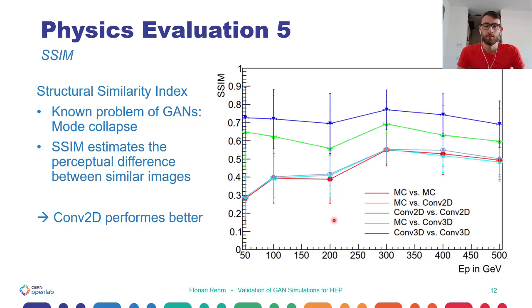Overall, we observe that the SSIM for the generated images versus the generated images of both GAN models in green and blue are clearly higher than the corresponding Monte Carlo value in red, indicating that on average, GAN images are more similar to each other than Monte Carlo images are. Or in other words, GANs fail to reproduce the image diversity present in the Monte Carlo sample. The convolutional 2D model does however perform better with a lower SSIM than the 3D model.